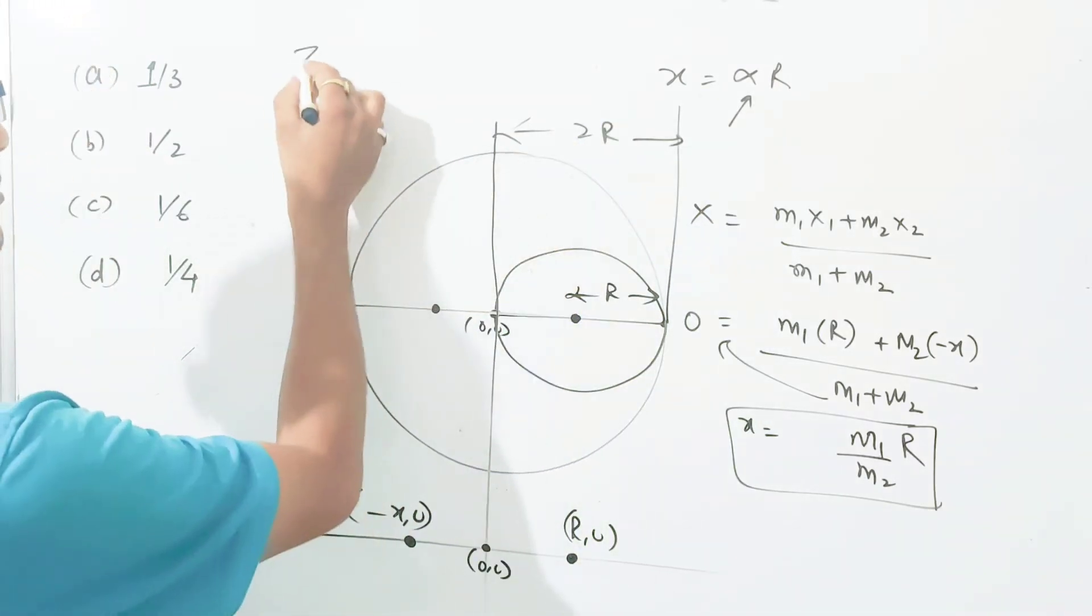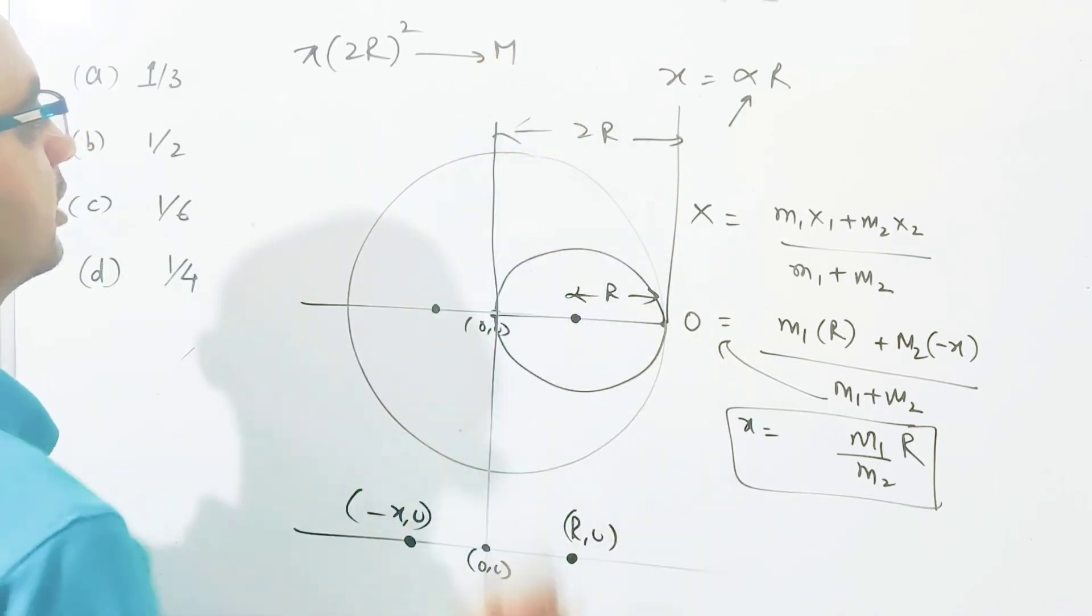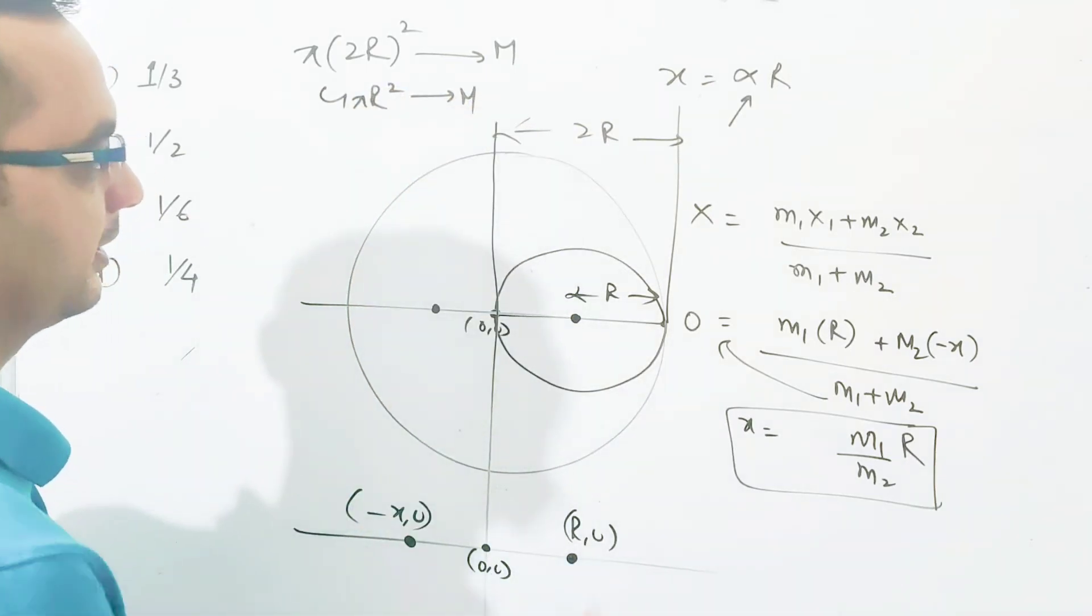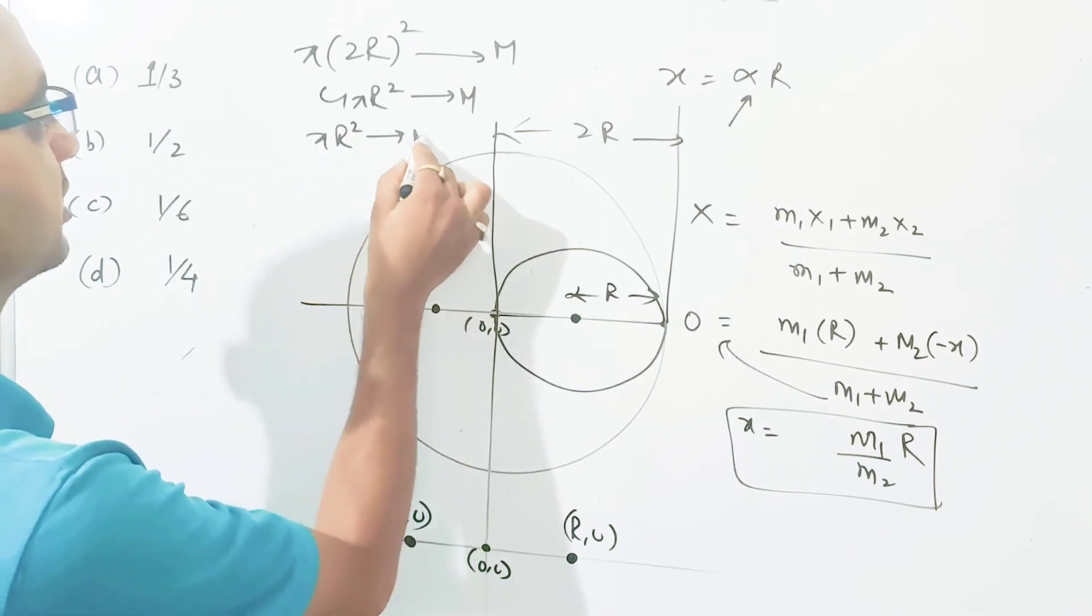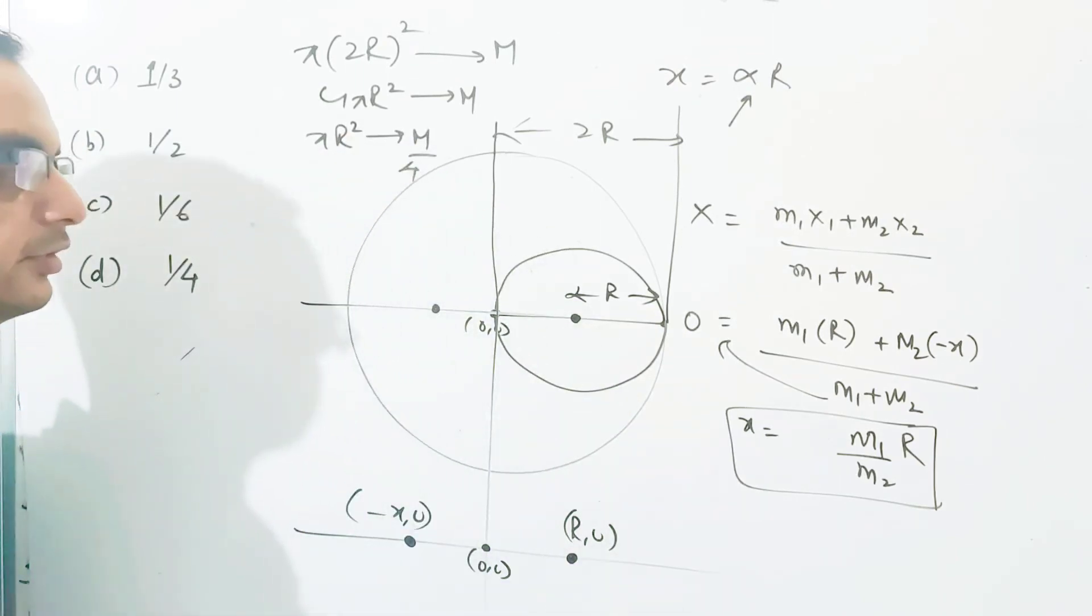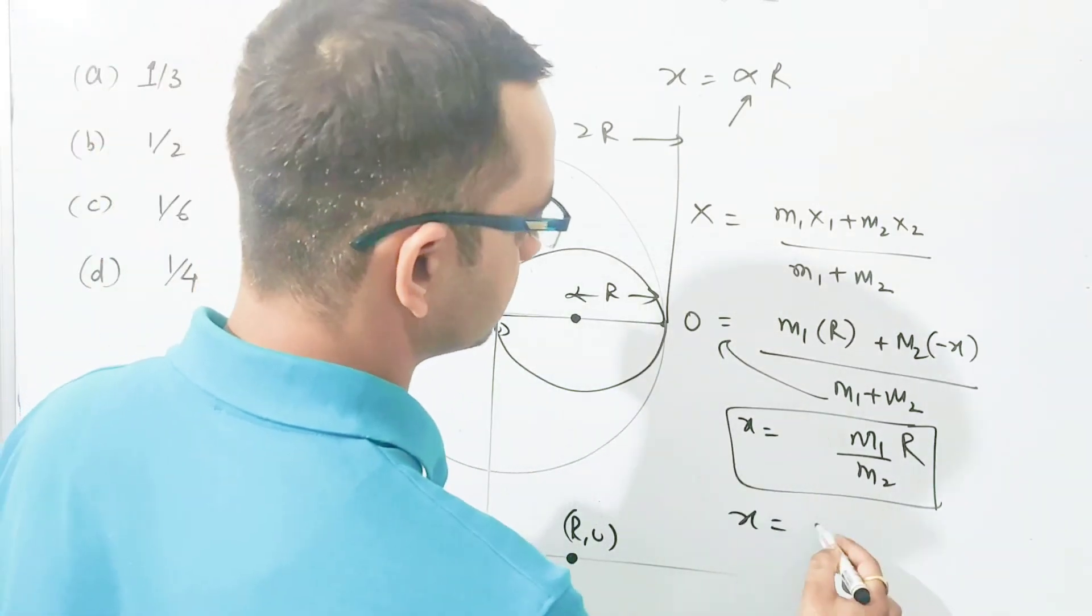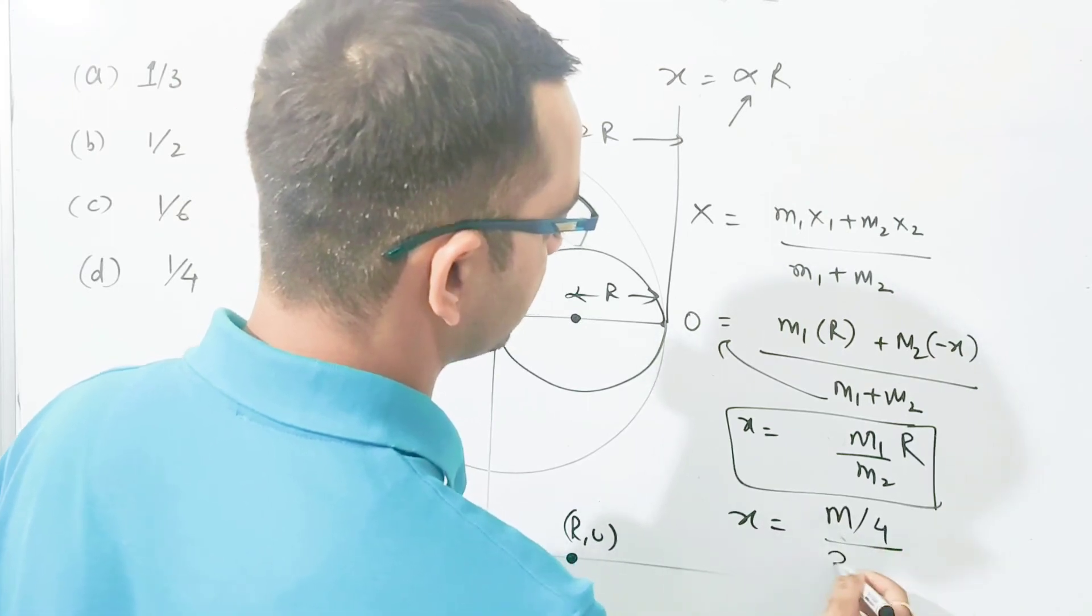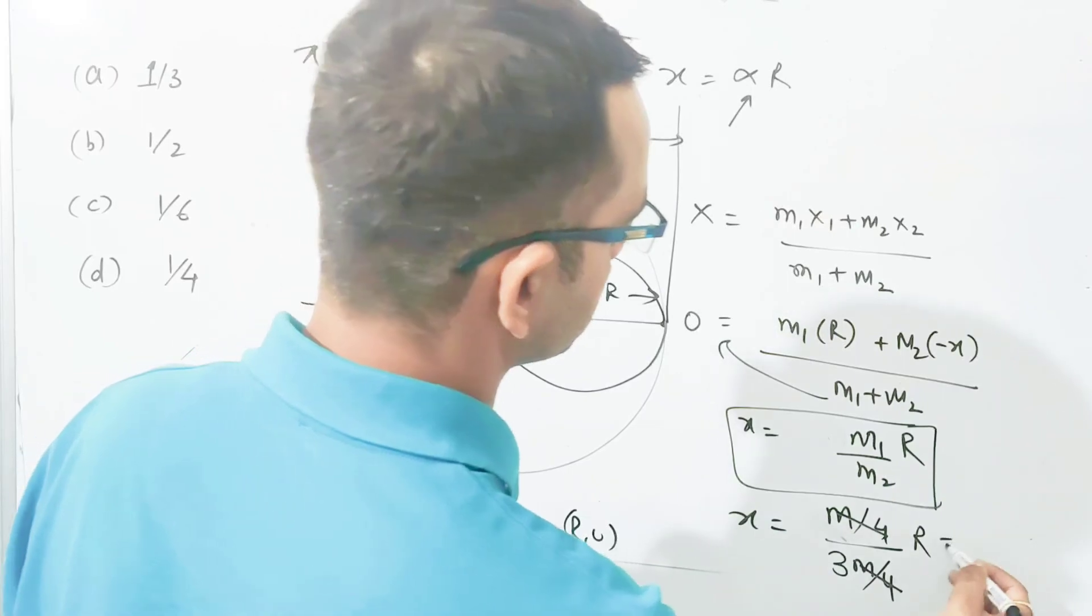So the disc of radius 2R has mass m. That's pi times 2R squared. 4 pi r squared has mass m. The disc of radius r has pi r squared, so its mass is m by 4. So we get m1 which is m by 4 and the remaining is 3m by 4. So x equals m by 4 divided by 3m by 4 into r. The answer is r by 3.